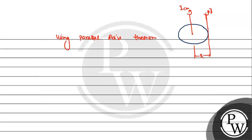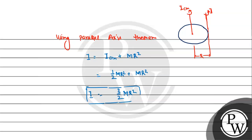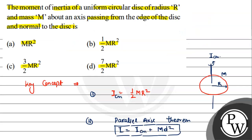Using the parallel axis theorem: I equals I_cm plus MR². I_cm is ½MR², so I equals ½MR² plus MR², which gives 3/2 MR². So the answer is 3/2 MR² — option C is correct.